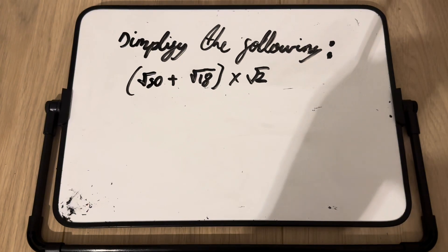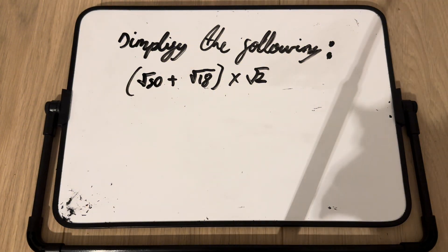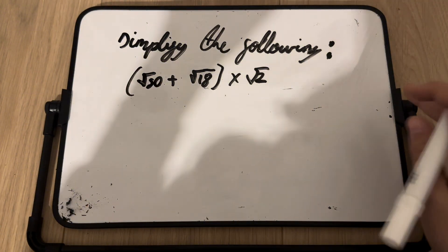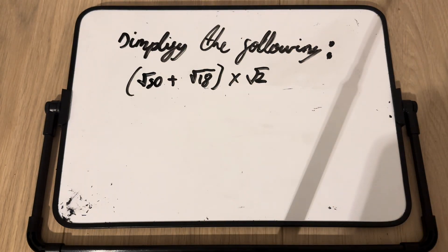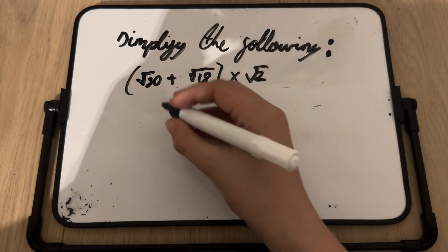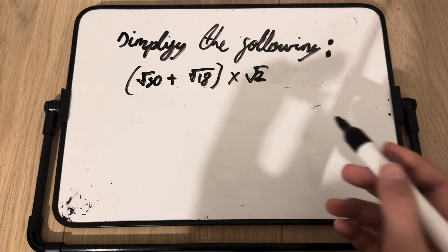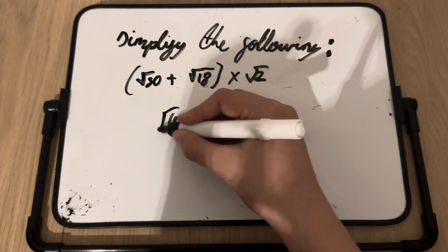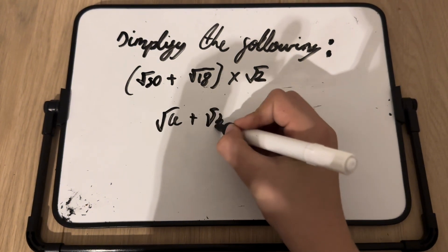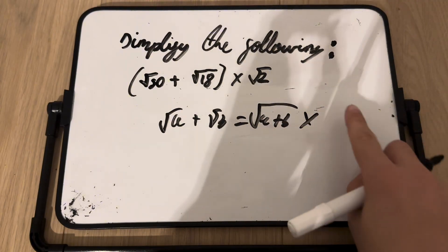Let's move on to question two. Pause the video if you'd like to try it yourself. The question asks you to simplify √50 + √18 × √2. You might think you can just add them directly, but you can't — you cannot add √a + √b like that. Instead, you need to simplify each square root separately.